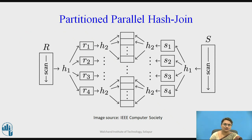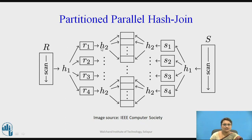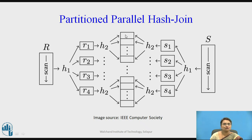For the partition parallel hash join, relation r and relation s are each partitioned with hash function h1. Then later, another hash function h2 is applied for repartitioning. The operations are then done in parallel across every processor — p0, p1, and so on. Processor p0, for example, takes the repartitioned data of r1 and s1 and performs the join operation on them.